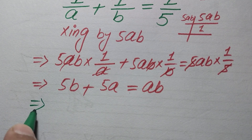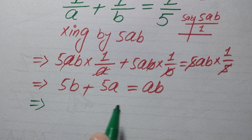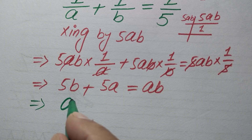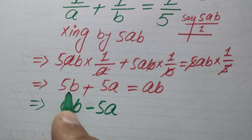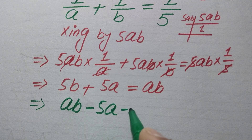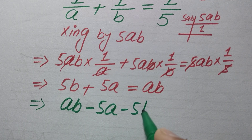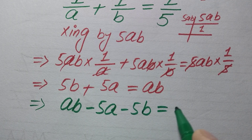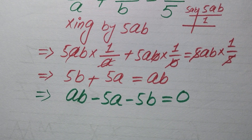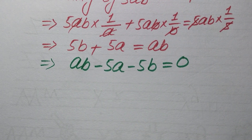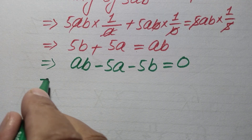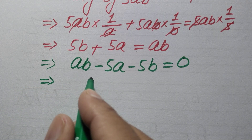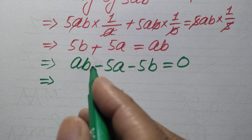Now we move both terms to the right-hand side. ab − 5a − 5b = 0. The first two terms involve a and the last term involves b.